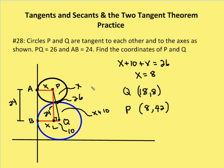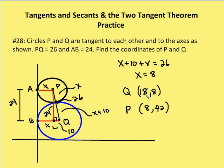Now I know that I can figure out what X is because X plus 10 plus X is going to be equal to 26. The radius from P to the point of tangency is X, and the radius BQ is equal to X plus 10. So the radius of circle P is equal to X, and the radius of circle Q is equal to X plus 10. So X plus 10 plus X equals 26. X is equal to 8.